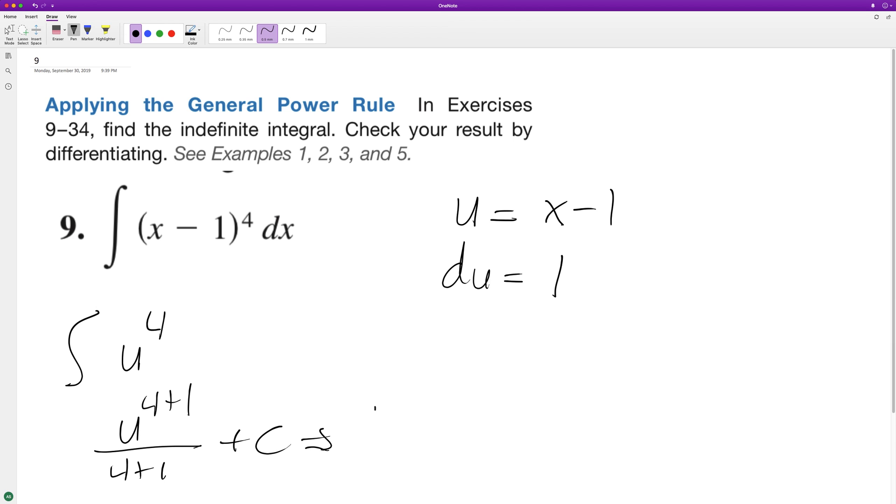We have u to the fifth over five plus c, and now we can just sub back in and we end up with x minus one raised to the fifth over five plus c.